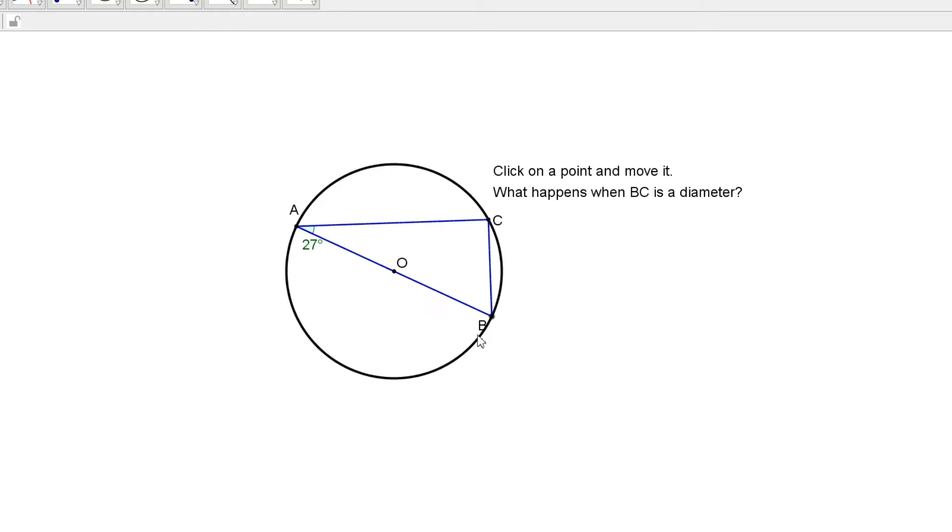One more time. If I move this one here and move this one so that BC is the diameter. And again, we can see that the angle of the circumference is 90 degrees.